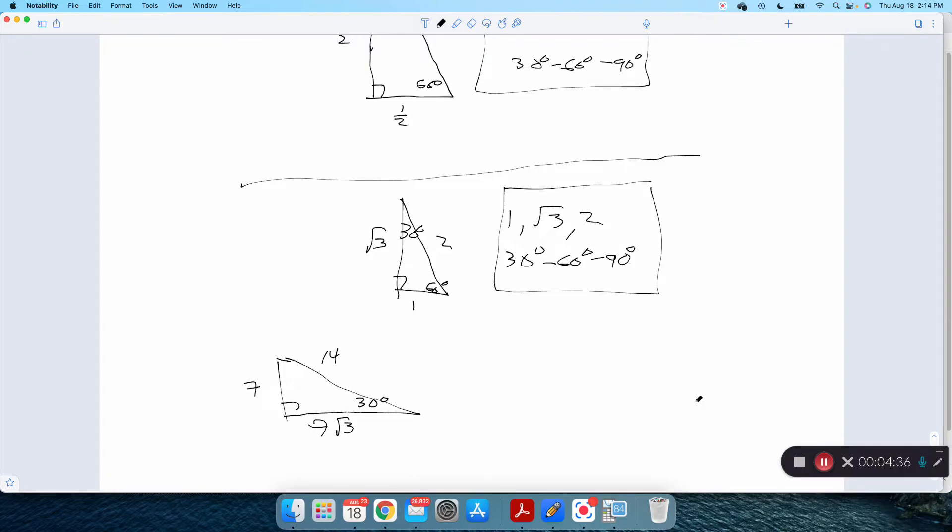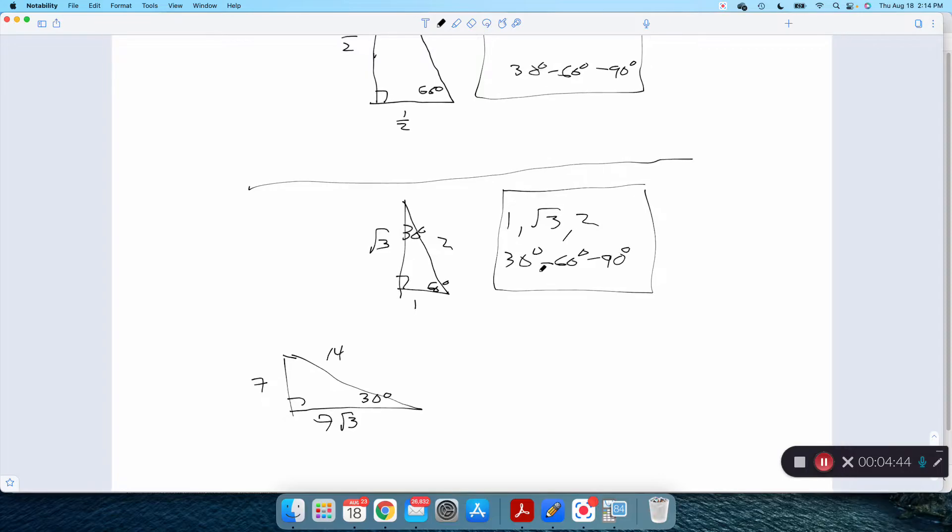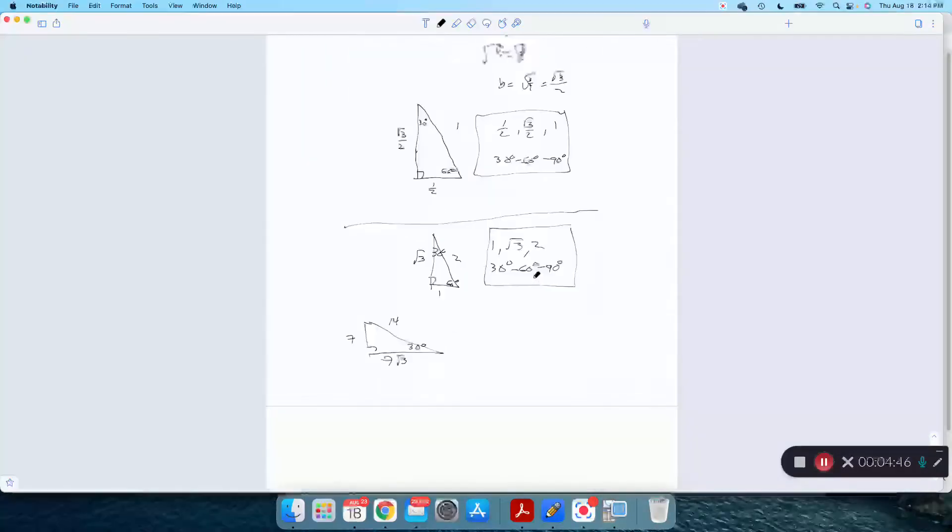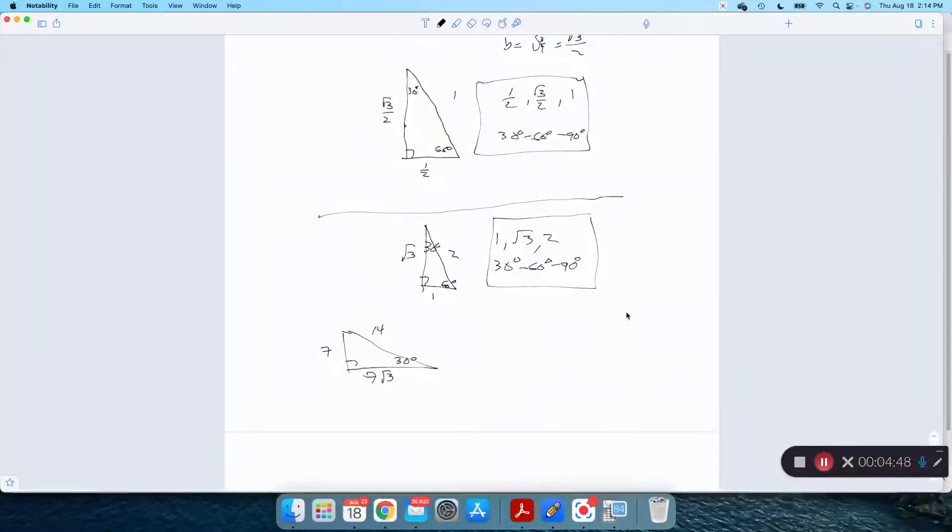Now, why do we care about this? Because we get some nice pretty trig functions from these. So, in any of these triangles, I could literally use any of them I've drawn here. I could say, what is sine of 30 degrees? Well, sine of 30 degrees will be opposite from the 30 over hypotenuse. One half over 1. Or I could use this triangle. Sine of 30 will be opposite over hypotenuse, 1 over 2. Or I could use this one.